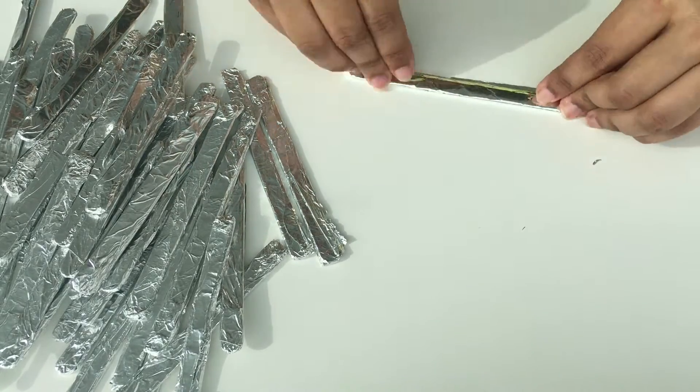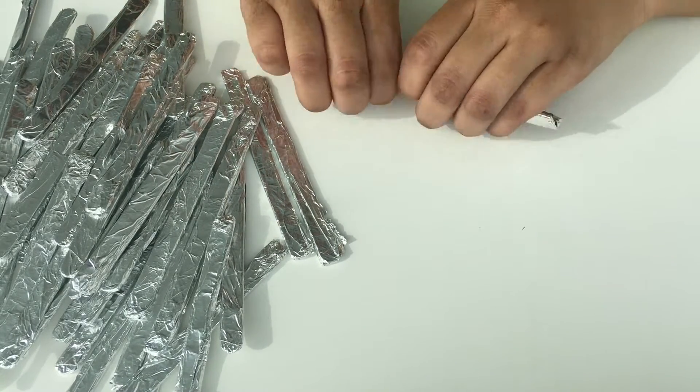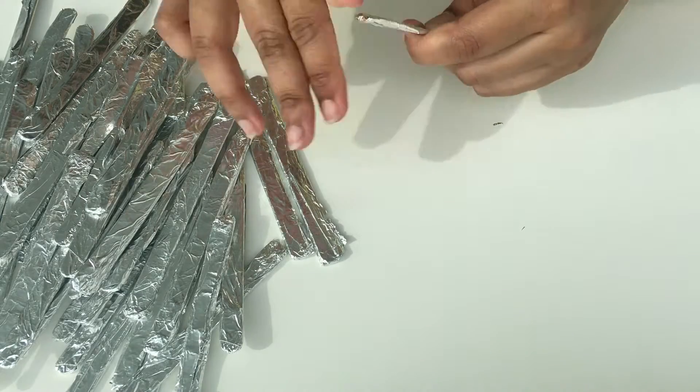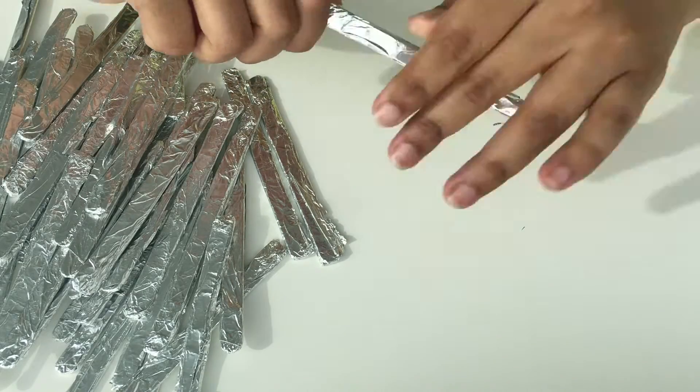To make the foil very secure around the stick, I pressed it firmly and then started twisting it between my fingers like I'm showing in the video.